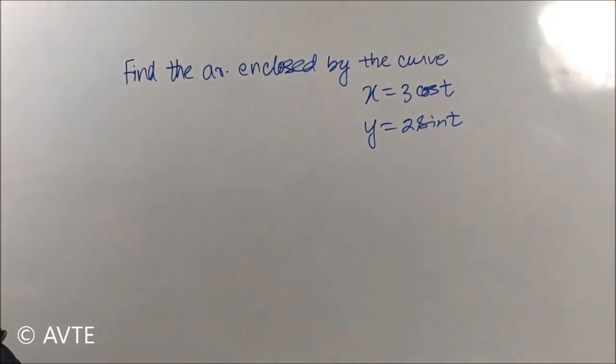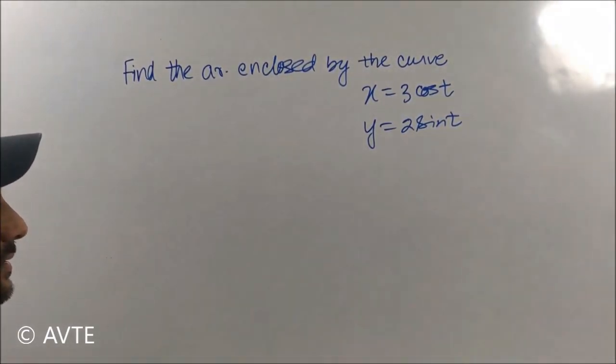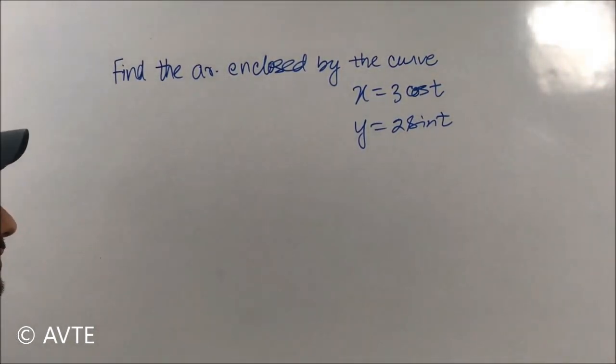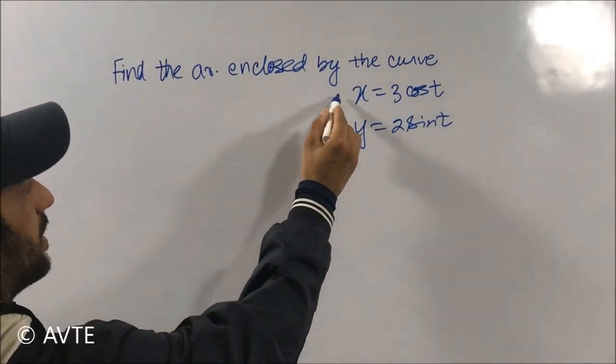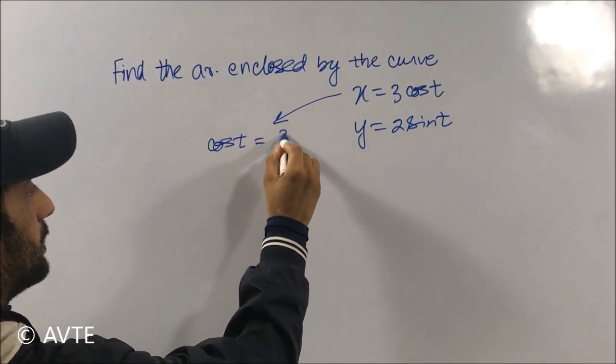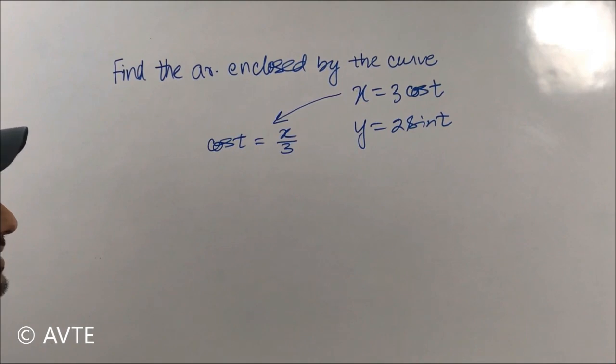No, there is nothing to worry. What you will be doing, you will find the value of cos t and you will get cos t as X upon 3.